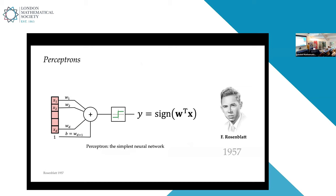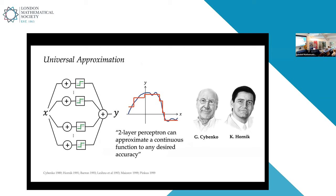We know that neural networks with just two layers have universal approximation: any continuous function can be approximated to arbitrary accuracy. They are extremely expressive. The problem is that these existence theorems don't tell you how to do it — they don't tell you how many neurons you need or exactly how to choose the weights. It doesn't provide a constructive answer; it just tells you such an architecture exists. The problem is that approximating a function from a finite sample requires assumptions about regularity.